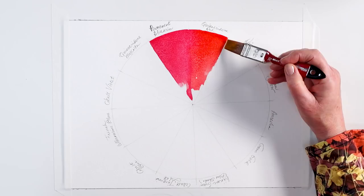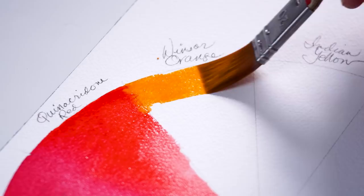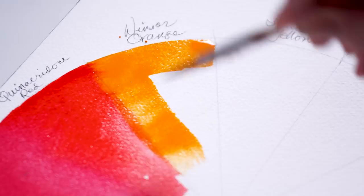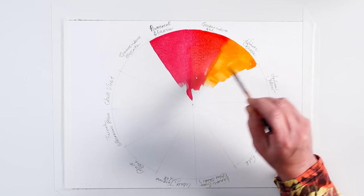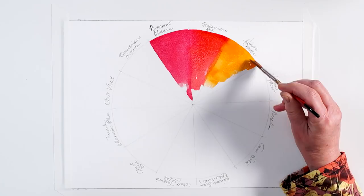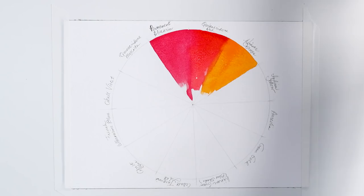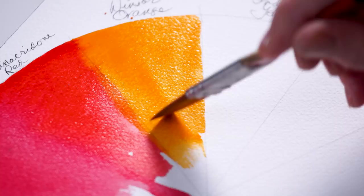We're going to go now even warmer towards yellow to Windsor orange. Remember that if you don't have all of these colors, for example you don't have this Windsor orange, you can mix a red and a yellow and create your own orange. Windsor orange is a little bit more opaque, but it gives us a beautiful orange.